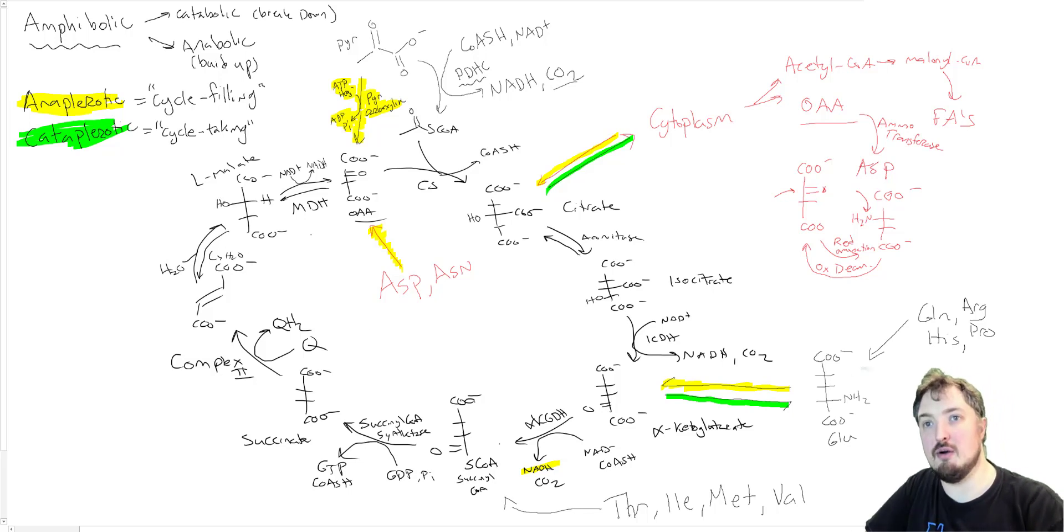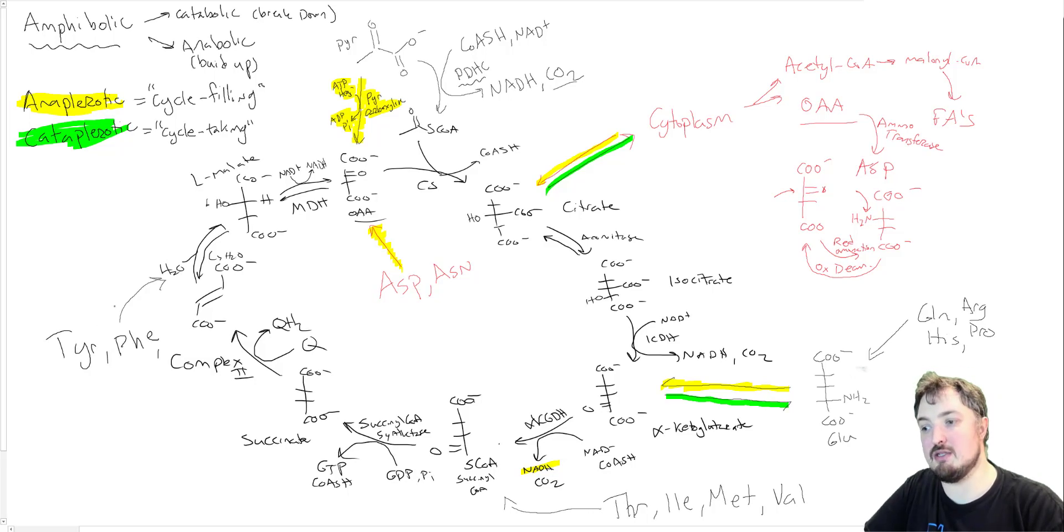Fumarate, over here on the side. Fumarate allows us to take in tyrosine, phenylalanine, and again, we've already talked about aspartic acid and asparagine coming in here. So we're filling in that cycle in all these different ways.